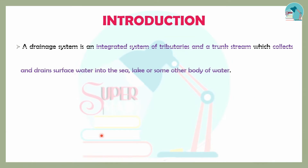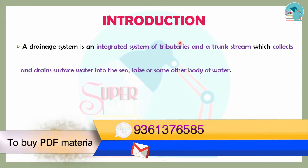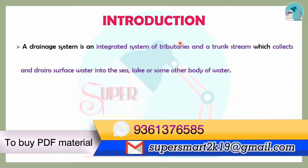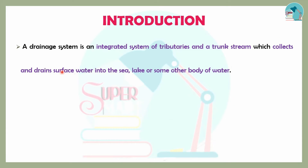First, we will introduce the river system. In the drainage system, the tributaries join the trunk stream as an integrated system. The tributaries are smaller rivers joining a main river at various points. If you collect surface water, it can drain to a sea, lake, or other body of water — that is the drainage system.